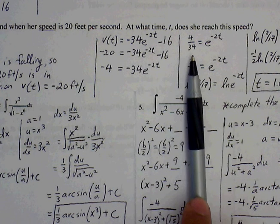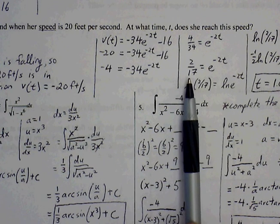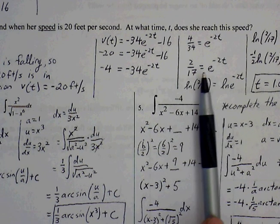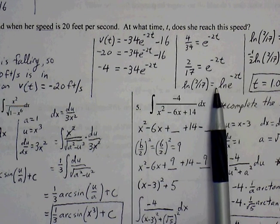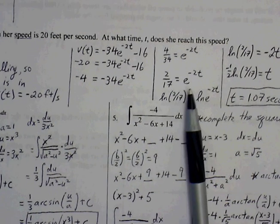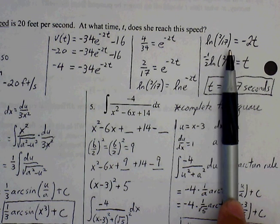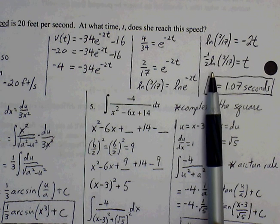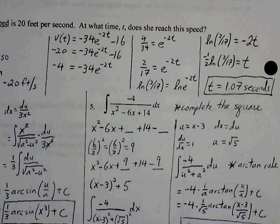Divide both sides by negative 34, we get 4 over 34 equals e to the negative 2t. The fraction reduces to be 2/17. We want to bring the negative 2t down, so we introduce logs to both sides. Now the negative 2t can come down in front. This natural log of e simply goes, it's just going to be 1. So we have natural log of 2/17 is equal to negative 2t. We solve for t, so t is equal to negative 1/2, natural log of 2/17. Plug this in your calculator, and t is equal to 1.07 seconds.